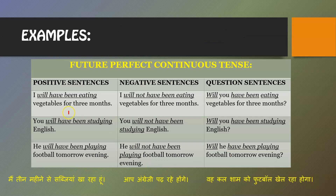Examples of future perfect continuous: Positive — 'I will have been eating vegetables for three months' — an action that started in the past and is still continuing in the future. Negative — 'I will not have been eating vegetables for three months.' Question — 'Will you have been eating vegetables for three months?' You can also look at the remaining examples and try to find the meaning.